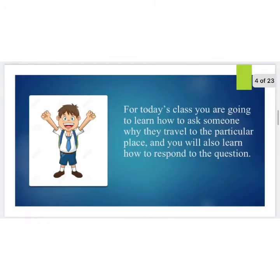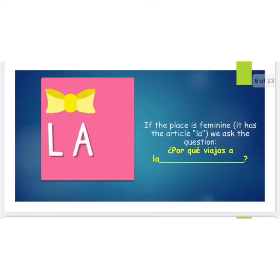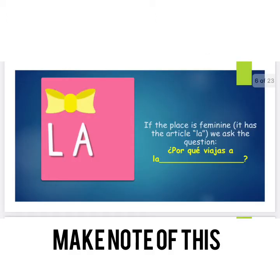Para esta clase, you are going to learn how to ask someone why they travel to a particular place. To find out why someone travels to a particular place we ask the question '¿Por qué viajas a la?' or '¿Por qué viajas al?' followed by the place. What do you think is the difference between 'a la' and 'al'? If the place is feminine — meaning that it has the article 'la' — we would use the question '¿Por qué viajas a la?' followed by the place.